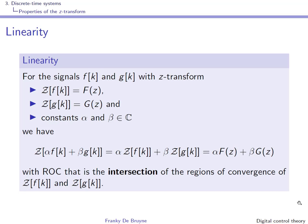As announced before, the Z-transform is a linear transform. This linearity property is inherited from the Laplace transform. Given the Z-transform of the sequence f and the Z-transform of the sequence g, you can obtain the Z-transform of a linear combination of these sequences. This Z-transform is simply the same linear combination of the Z-transforms of f and g, and the region of convergence is the intersection of the regions of convergence of the Z-transforms of f and g.